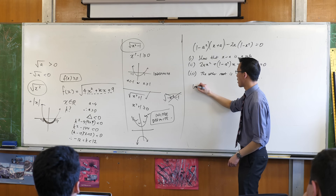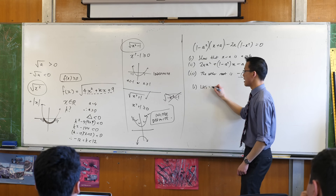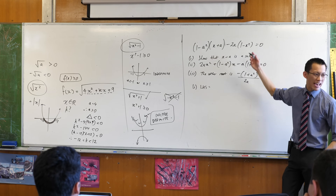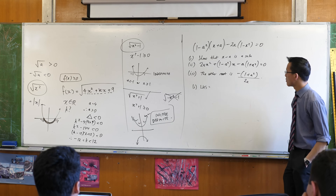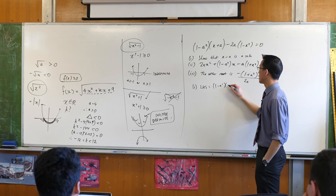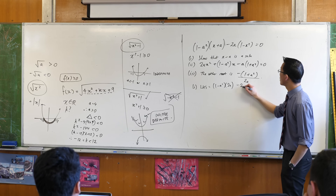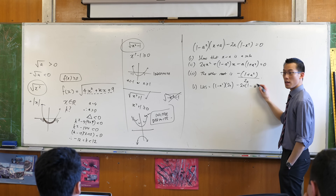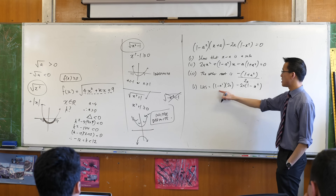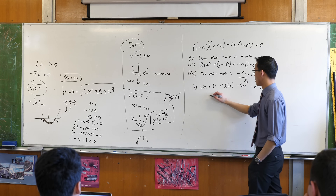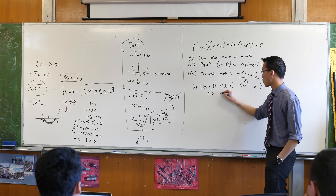So the way I would do this is for part one, I would say the left-hand side equals — and I'm going to substitute in x equals a. So let's just quickly do that: 1 minus a squared, minus 2a, 1 minus a squared. That's the same thing just written in reverse order, so that's 0 as required.